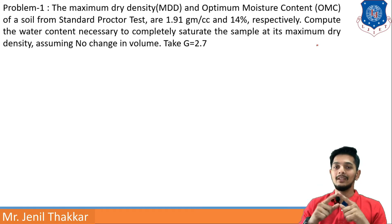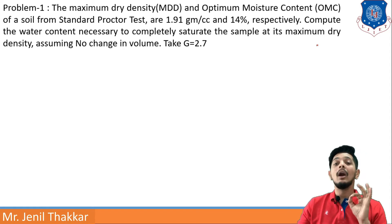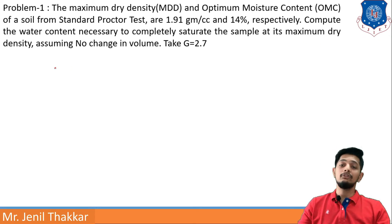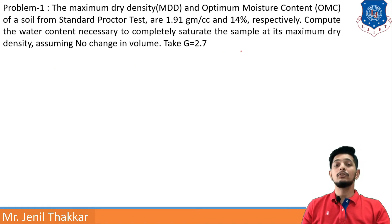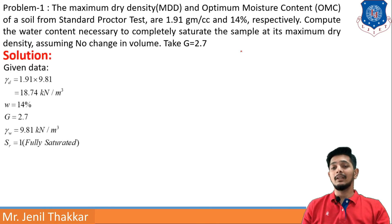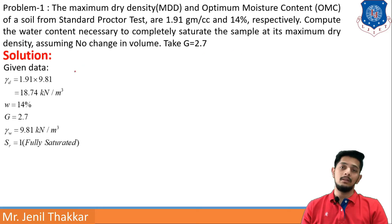Compute the water content necessary to completely saturate the sample — the water content which will make Sr = 100%, i.e., fully saturated — at its maximum dry density, assuming no change in volume. G is given as 2.7. This is a straightforward problem.